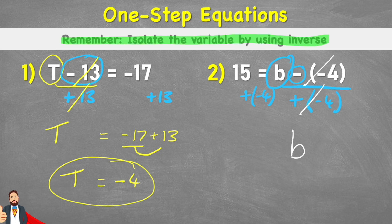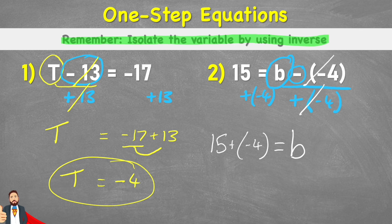And I'm just going to be left with b on its own. So therefore b equals 15 plus negative 4. If we're looking back on our number line, we're on 15 at the moment and I'm adding a negative 4. So I'm going to come down the number line and I'll end up with 11. So b equals 11.